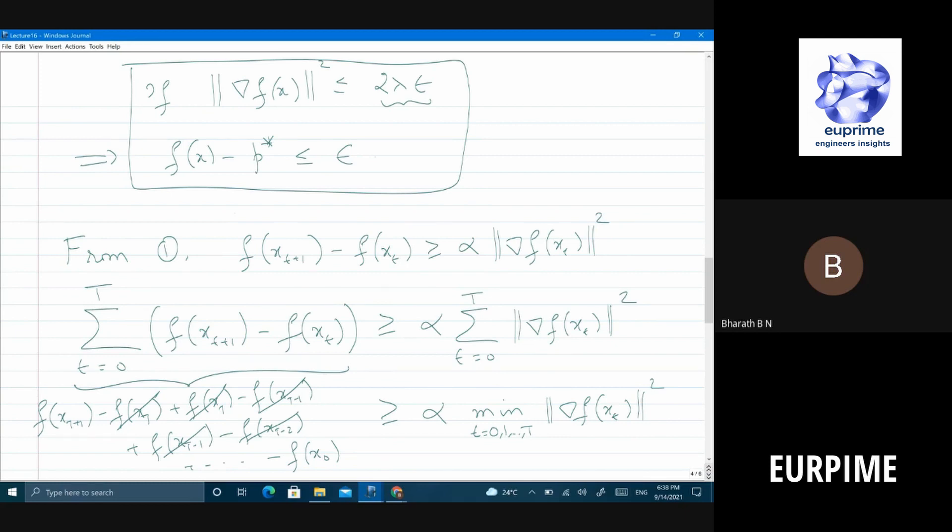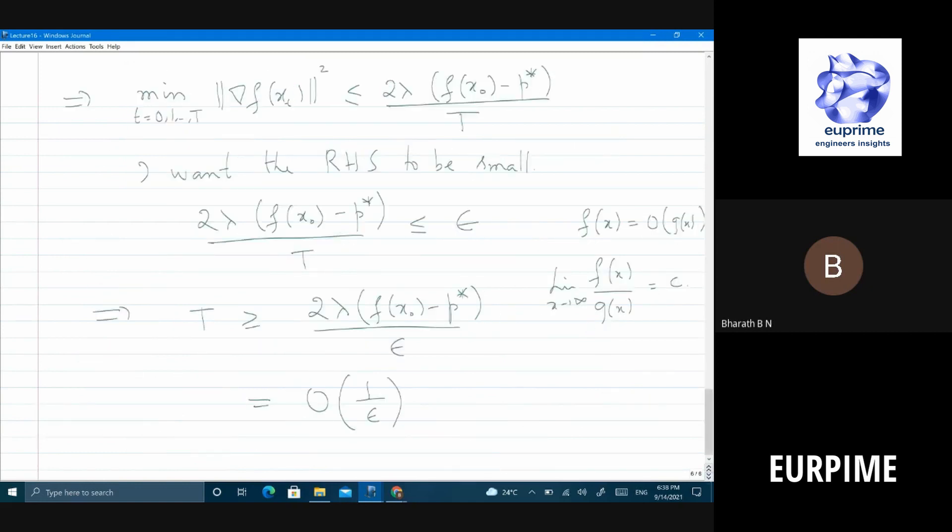I should ensure that the gradient is less than or equal to 2λε. So I can as well do it - instead of this, I am going to plug in 2λε here. What will happen? This will be 2λε, so this will be 2λ here. 2λ will cancel and what do we get? f(x₀) minus p* divided by ε.